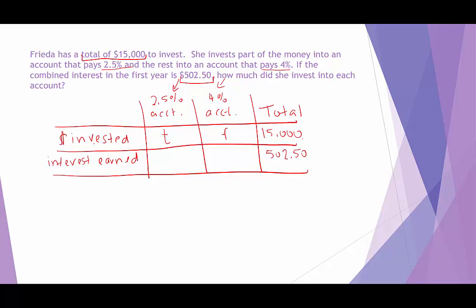This gives us two equations: T plus F equals 15,000, and 0.025T plus 0.04F equals 502.50. We can use either elimination or substitution. I suggest getting rid of the decimals in the second equation first. Since the digit 5 is in the thousandths place, we multiply the entire equation by 1,000, giving us 25T plus 40F equals 502,500.